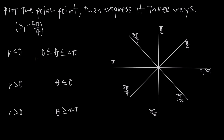Polar coordinate points are given in the form r, theta, where theta is the angle between the positive direction of the x-axis and the point that we're interested in, and r is the distance of the point from the origin.